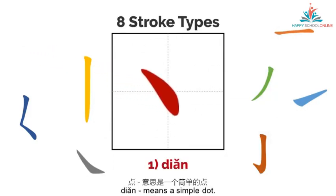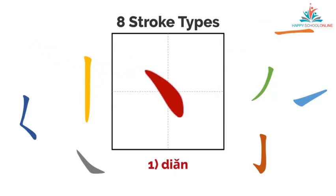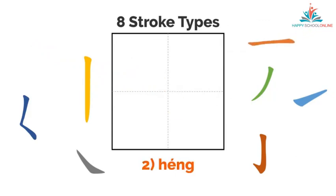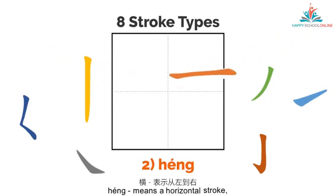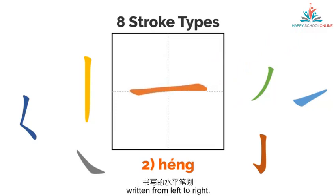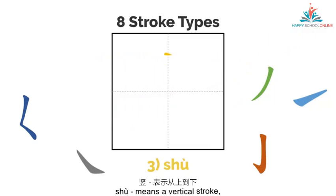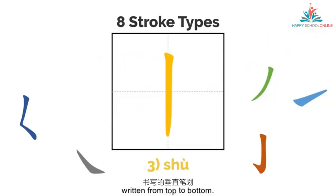Firstly, 点 means a simple dot. Second, 橫 means a horizontal stroke, written from left to right. Third, 束 means a vertical stroke, written from top to bottom.